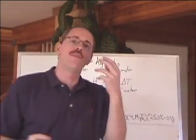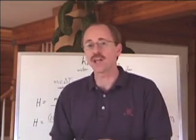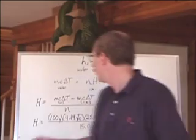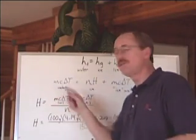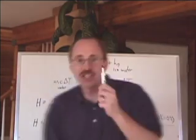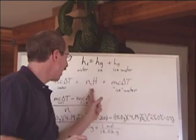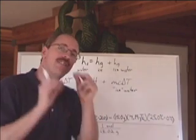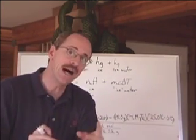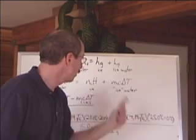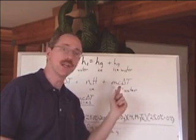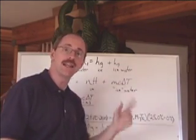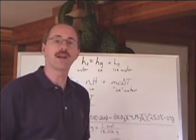So, the temperature change of the calorimeter water is going to be MC delta T. The change in the ice is NH because it's undergoing a phase change, but the water coming off the ice is undergoing a temperature change, both on the heat gain side. They're both gaining heat from the calorimeter water.